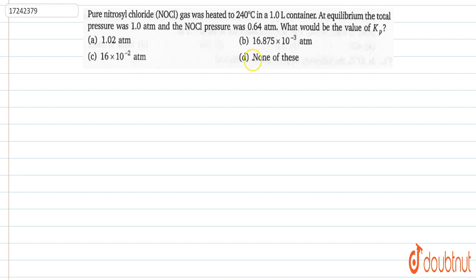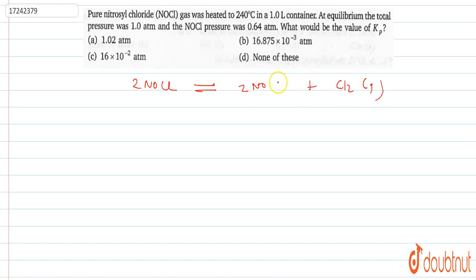So first of all, I will write the reaction: 2NOCl(g) → 2NO(g) + Cl₂(g). All species are gaseous.